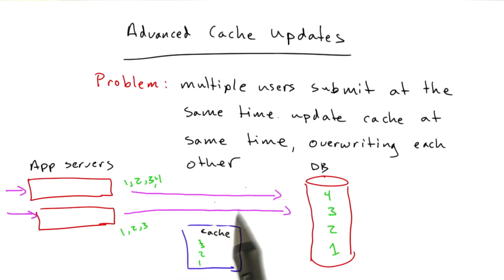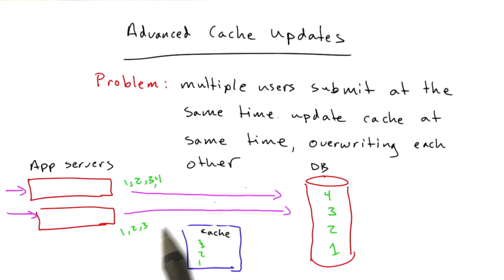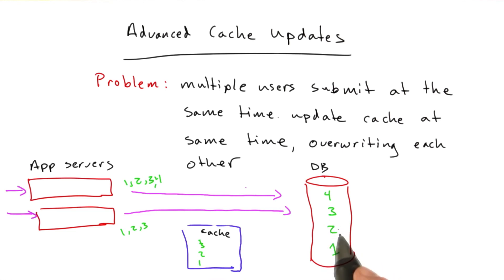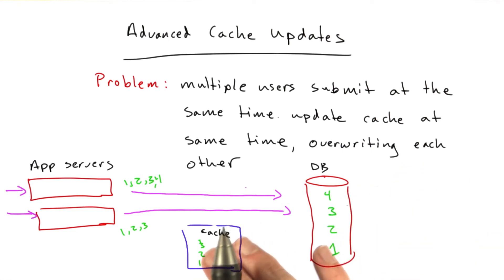And if we were redirecting the user to our front page to do the cache update that way, the odds of this happening are even more likely, because it's not going to happen quite so fast — we've got to go all the way to the user and back before we update our cache. So that's the problem: multiple app servers overwriting each other in the cache, because the cache doesn't have any transactions — it doesn't have the fancy stuff that the database has. On the database we just say 'insert this element,' but on the cache we say 'the list of elements is this,' so we can't just insert at the front of it. Let me introduce one solution to this problem.